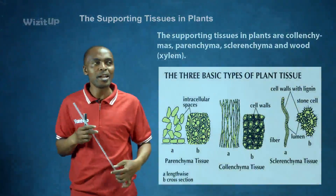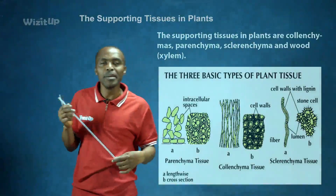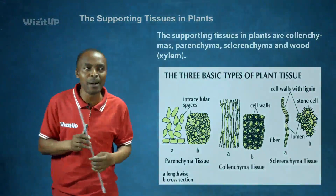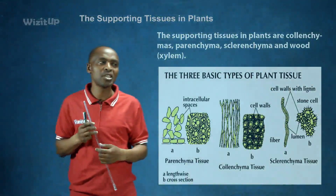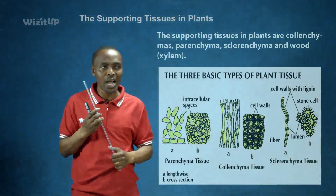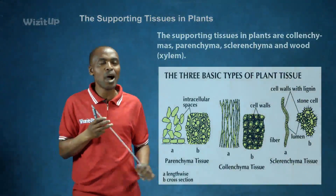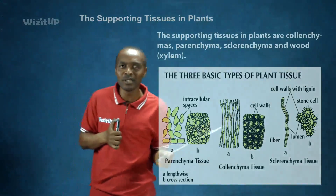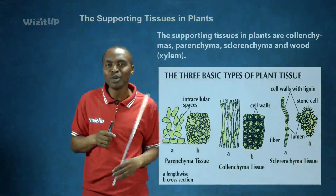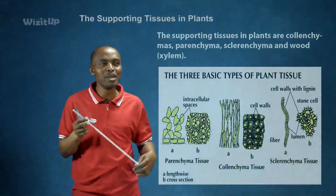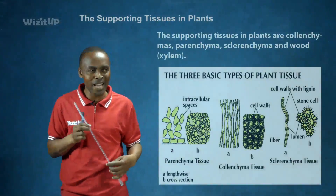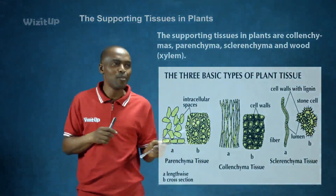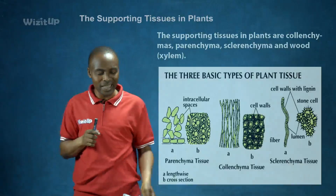To repeat, the main supporting tissues in plants are colenchyma, parenchyma, sclerenchyma, and the wood xylem. There is an illustration on the screen showing the main supporting tissues in plants.